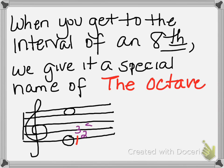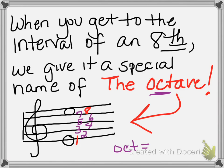If you said 'an eighth,' that's the distance of eight, but we have a very special name for it. When you get to the interval of eight, we call it the octave. Notice the prefix 'oct' — oct means eight. So the distance of eight is an octave. You have the unison at a distance of one, and the distance of eight is the octave.